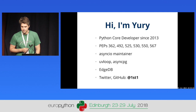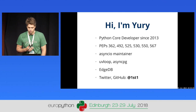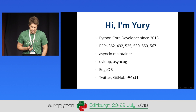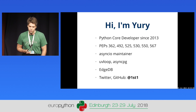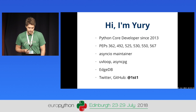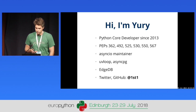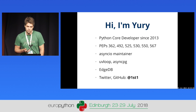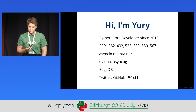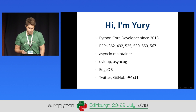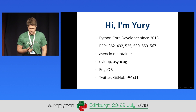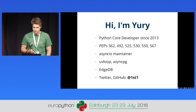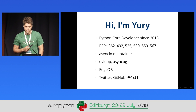I created the UvLoop library a while ago, which is an alternative event loop implementation for AsyncIO. It's used pretty widely now — a lot of big companies use it in production. I co-created the AsyncPG library with Elvis, who is also here today. That's an asynchronous PostgreSQL driver, and I work on EdgeDB, which is an object-relational database. You can follow me on Twitter and GitHub; my nickname is 1st1.